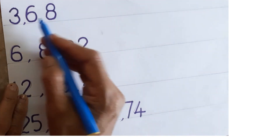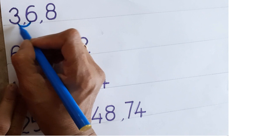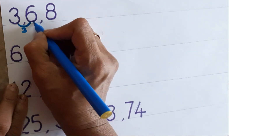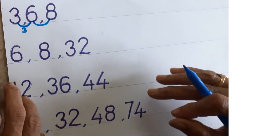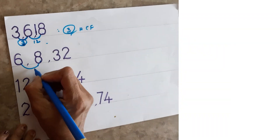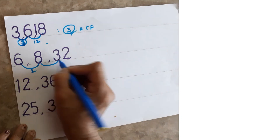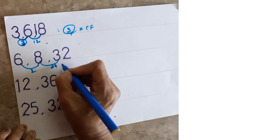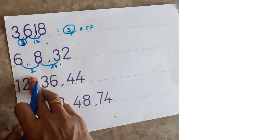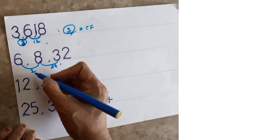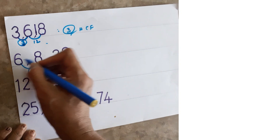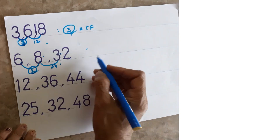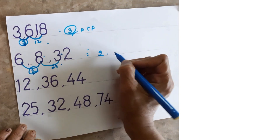One more example: 3, 6, 8, and 32. See the differences — 6 minus 3 is 3, 8 minus 6 is 2, 32 minus 8 is 24. The smallest difference is 2. Now check if 2 exactly divides all numbers: 2×3=6 ✓, 2×4=8 ✓, 2×16=32 ✓, and 3 as well. So 2 is the HCF.